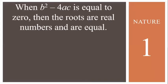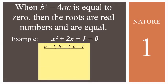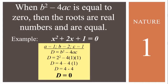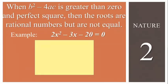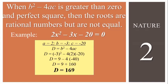To discuss further: when B squared minus 4AC equals 0, the roots are real numbers and are equal — one real root or two equal roots. For example, x squared plus 2x plus 1 equals 0 gives D equal to 0. When B squared minus 4AC is greater than 0 and a perfect square, the roots are rational numbers but not equal. For example, 2x squared minus 3x minus 20 equals 0 gives D equal to 169, which is a perfect square with square root 13, so it has two distinct real roots, rational but not equal.